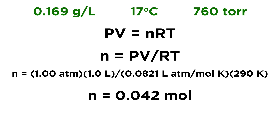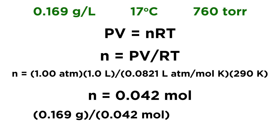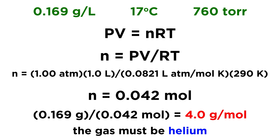Now we can go further, because if we assumed 1 liter, we also assumed 0.169 grams. So we can calculate the molar mass: for the 1 liter sample, that's 0.169 grams over 0.042 moles, which gives us 4.0 grams per mole. The molar mass of this unknown gas is 4.0 grams per mole. This number is so small it can only be one thing — helium. Helium is monoatomic and weighs four atomic mass units. The only gas lighter than that is hydrogen, H2, at two grams per mole. So helium is the only thing that works here, and that is the identity of this gas.